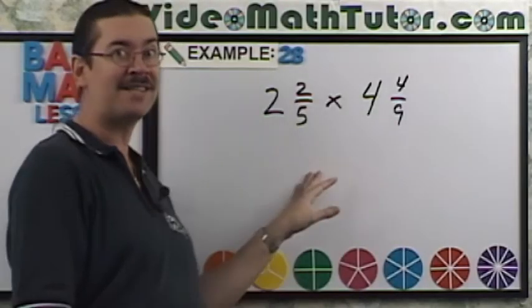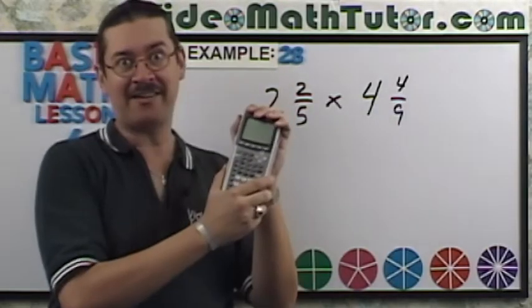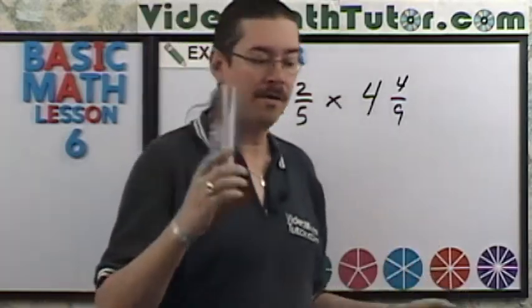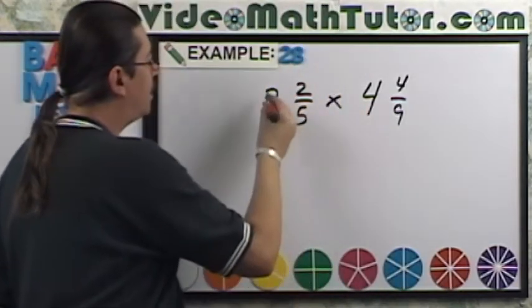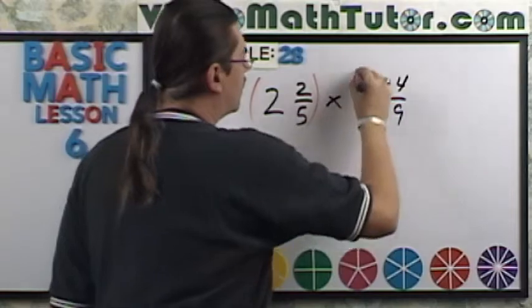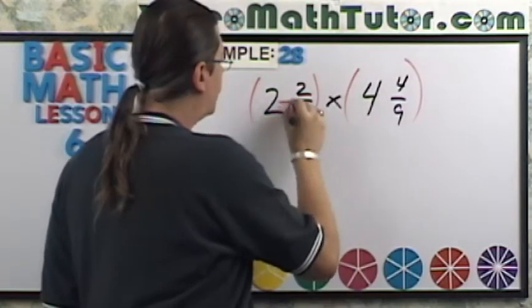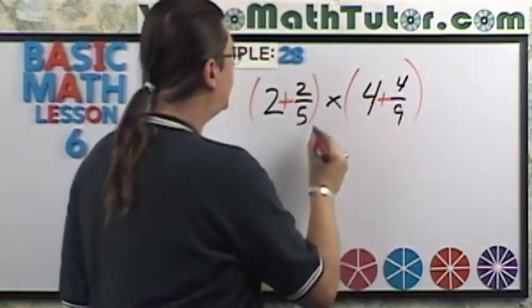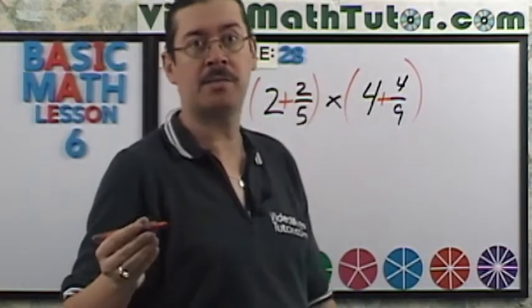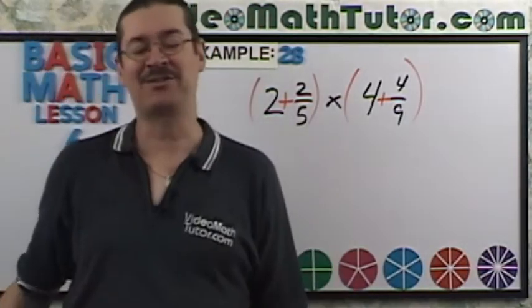Now I'd like to do the problem we just did on the calculator. What do we do? Well, the first thing you have to do is make sure you enclose your mixed numbers in a set of parentheses. And of course, put a plus sign between the whole part and the fractional part. Now it's ready to put into the calculator.